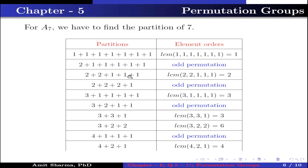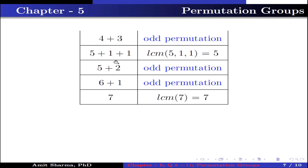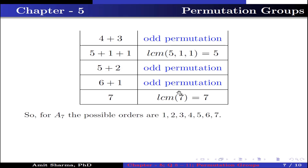Next, (2+2+1+1+1) has LCM 2. Then (2+2+2+1) is an odd permutation: each 2-cycle is an even cycle length making each an odd permutation; the product of two odd permutations is even, but then that even result times the remaining odd permutation gives an odd permutation, and the identity is even, so the overall result is odd — this does not belong to A7. Similarly we can find the other entries. For A7, the possible orders are 1, 2, 3, 4, 5, 6, 7.